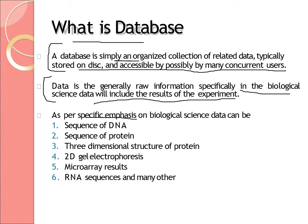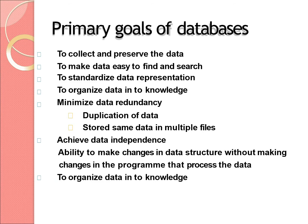In biological science, data can be of many types such as DNA sequences, protein sequences, three-dimensional structures of proteins, 2D gel electrophoresis results, microarray results, RNA sequences, and many others. There are a lot of databases involved in computational biology and we'll be going through each one in detail.